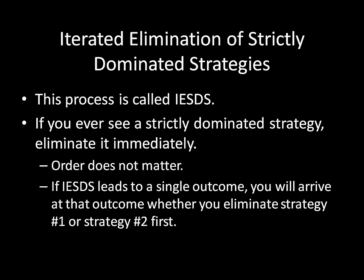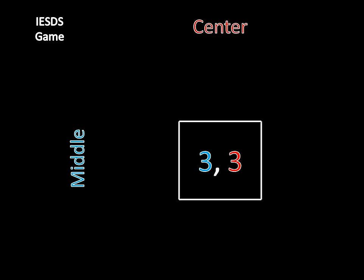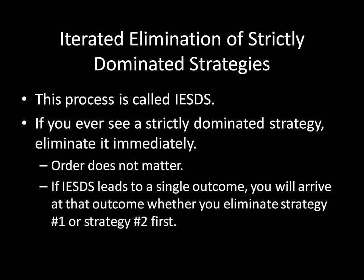Going forward, if you ever see a strictly dominated strategy, you should eliminate it immediately. That means if you see any sort of game — whether it's a simpler 2x2 game, a larger 3x3 game, or even something like a 6x6 game — if you ever see a strictly dominated strategy, eliminate it immediately. Now, a couple of quick points: you could be in a situation where you see multiple strategies that are strictly dominated at the same time. As it turns out, the order doesn't matter. If you eliminate either strategy, the other one is still going to be strictly dominated afterward. So if IESDS leads you to a single outcome — a solution where we know the player is going to play middle-center — it really doesn't matter which strategy you eliminate first. You'll still arrive at that one single outcome. That's why Iterated Elimination of Strictly Dominated Strategies is really, really useful.